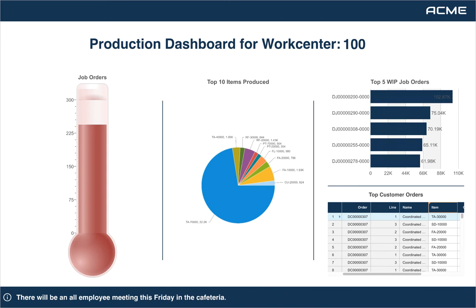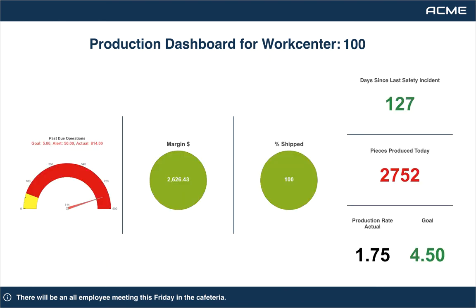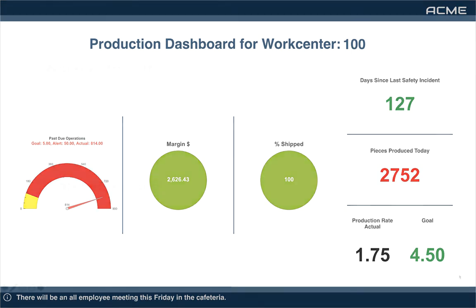Mongoose also supports a full fusion charting engine, providing 26 different types of charts for your unique needs. These components can also support complex calculations based off multiple sources of data or even external data sources.